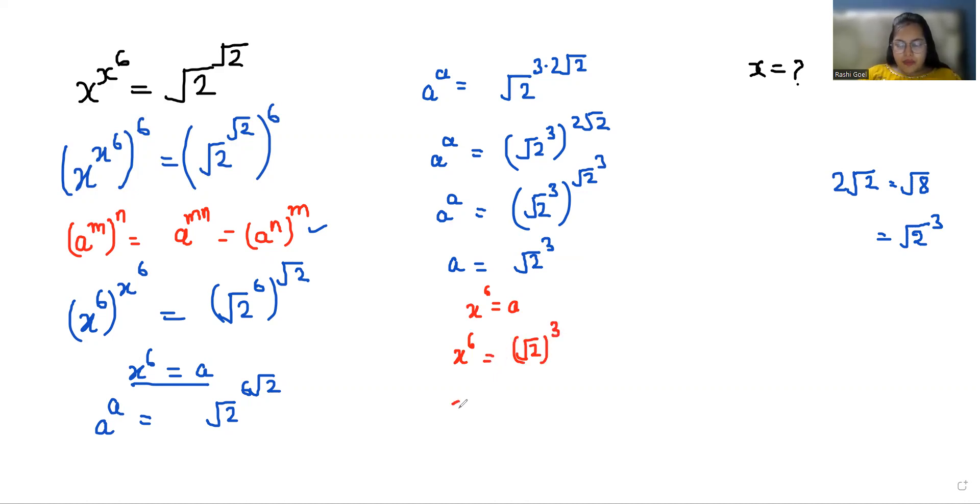Now I'm going to multiply with power 1/6 both sides. So we can cancel out: x equals (√2)^(1/2). So x equals 2^(1/2 times 1/2). So x equals 2^(1/4), or x equals the 4th root of 2.